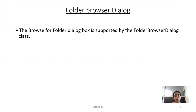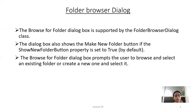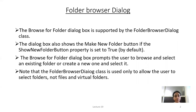The first dialog is Folder Browser Dialog. The Browse for Folder dialog box is supported by the FolderBrowserDialog class. The dialog box also shows the Make New Folder button if the ShowNewFolderButton property is set to true, which is the default. The dialog box prompts the user to browse and select an existing folder or create a new one. Note that the FolderBrowserDialog class is used only to allow the user to select a folder, not files.